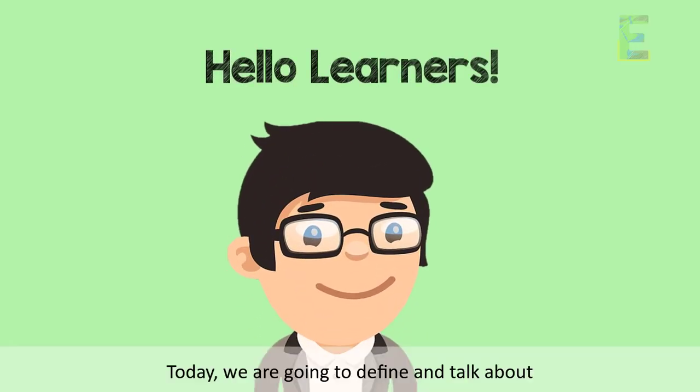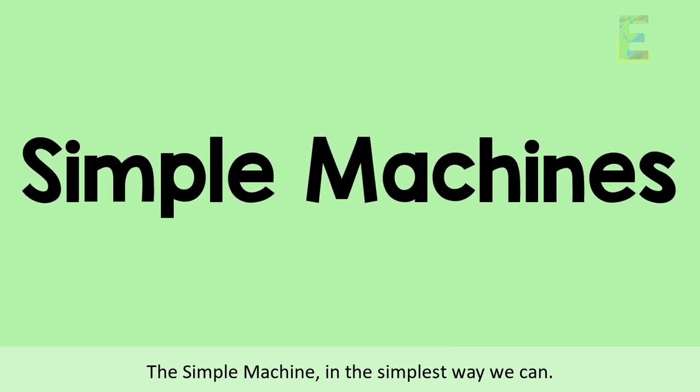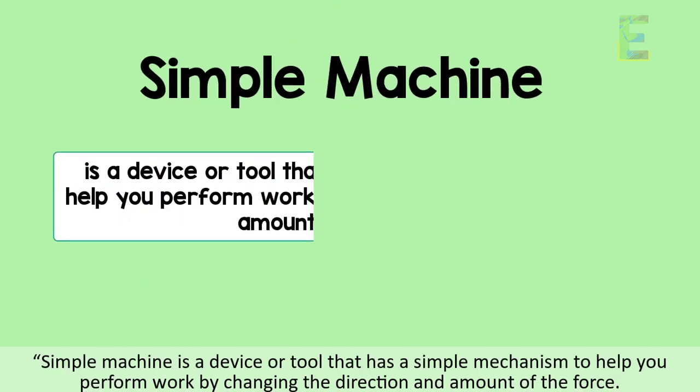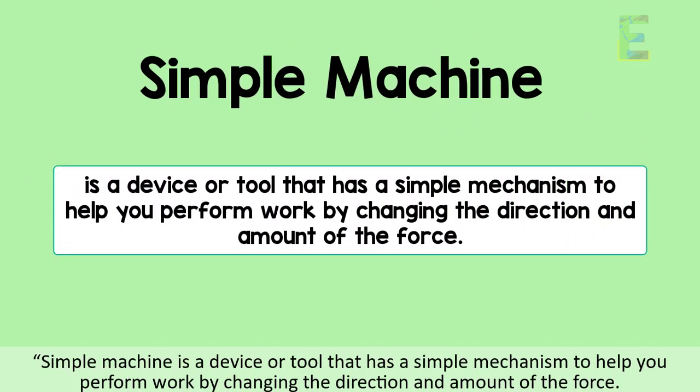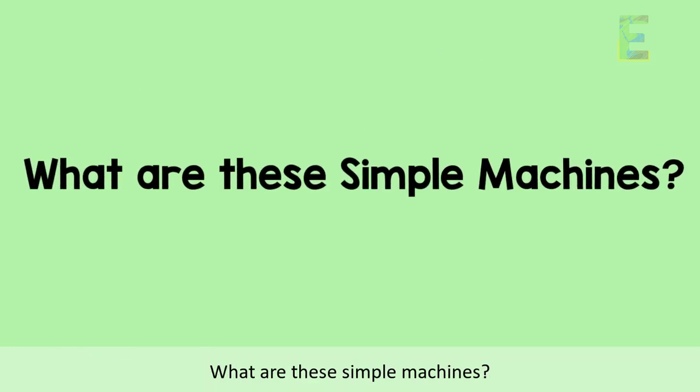Good day learners, today we are going to define and talk about the simple machine in the simplest way we can. A simple machine is a device or tool that has a simple mechanism to help you perform work by changing the direction and amount of the force.